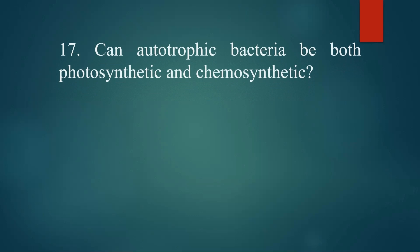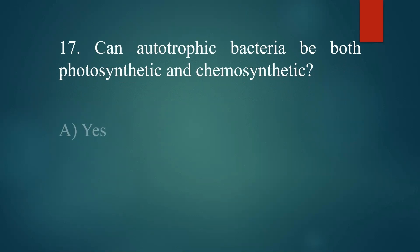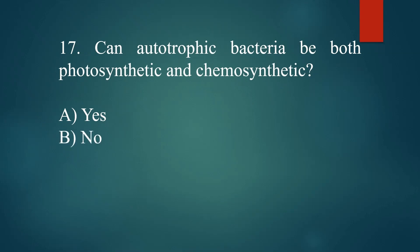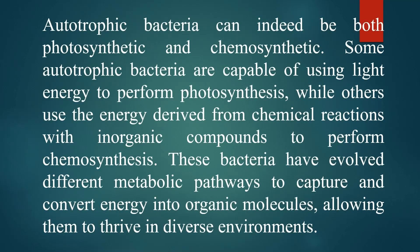Can autotrophic bacteria be both photosynthetic and chemosynthetic? Answer: Yes. Autotrophic bacteria can indeed be both photosynthetic and chemosynthetic. Some autotrophic bacteria are capable of using light energy to perform photosynthesis, while others use the energy derived from chemical reactions to perform chemosynthesis. These bacteria have evolved different metabolic pathways to capture and convert energy into organic molecules, allowing them to thrive in diverse environments.